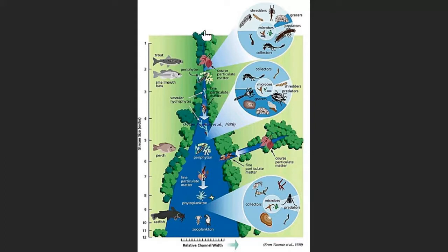Allochthonous material refers to things like sticks, leaves, and any organic matter falling into the stream. There is also a term called coarse particulate matter — also labeled as coarse particulate organic matter or C-POM. C-POM dominates in the headwaters. As we move into the mid reaches and further downstream, it shifts into F-POM — fine particulate organic matter.